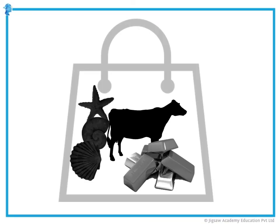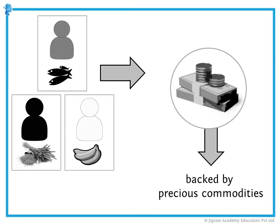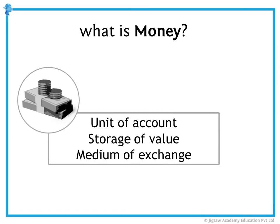As time progressed and people realized the impracticality of traveling and bartering with cattle, seashells, and metal, the concept of money was slowly introduced. People started using coins and notes as it was much easier to carry, and as long as it was backed by precious commodities, they served the purpose of exchange. So to conclude, what is money? It is a measurement of account, it is a storage of value, it is a medium of exchange. Money is the lubricant which makes the economy go round.